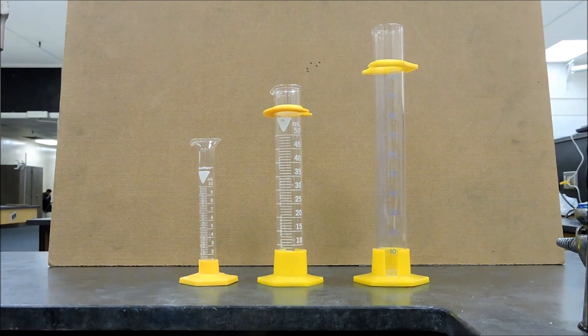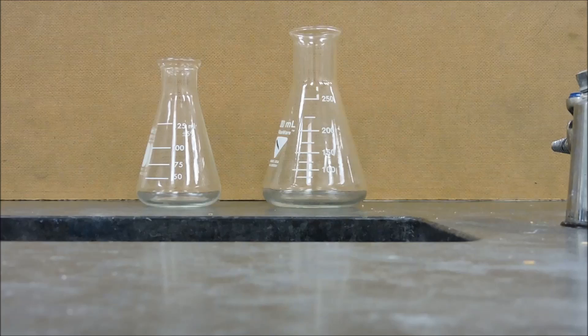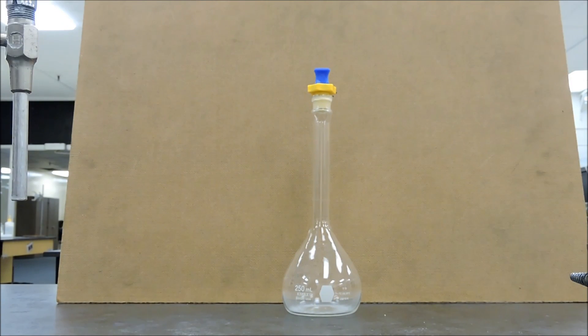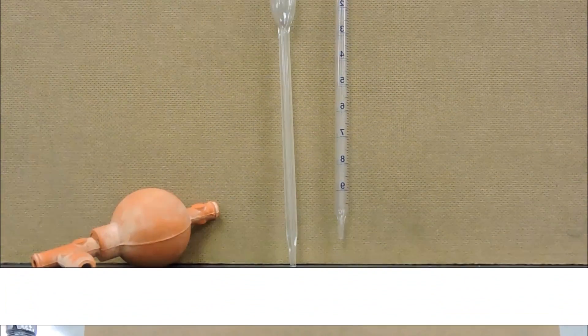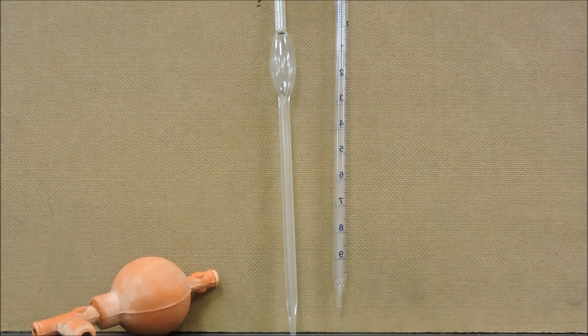The Erlenmeyer flask is used to measure volume of a liquid. This is a round bottom flask used to measure a large amount of volume. These are pipettes. They are used to measure volume more accurately than a graduated cylinder. The item to the left is called a bulb.